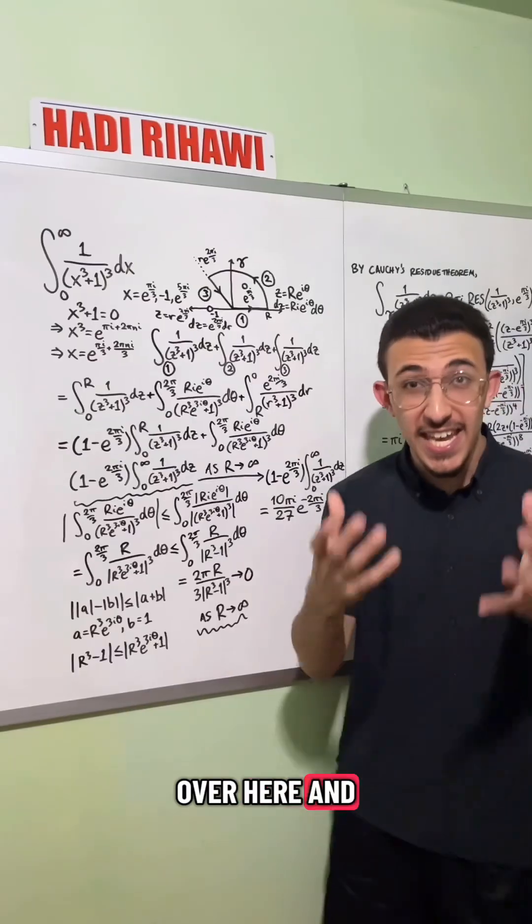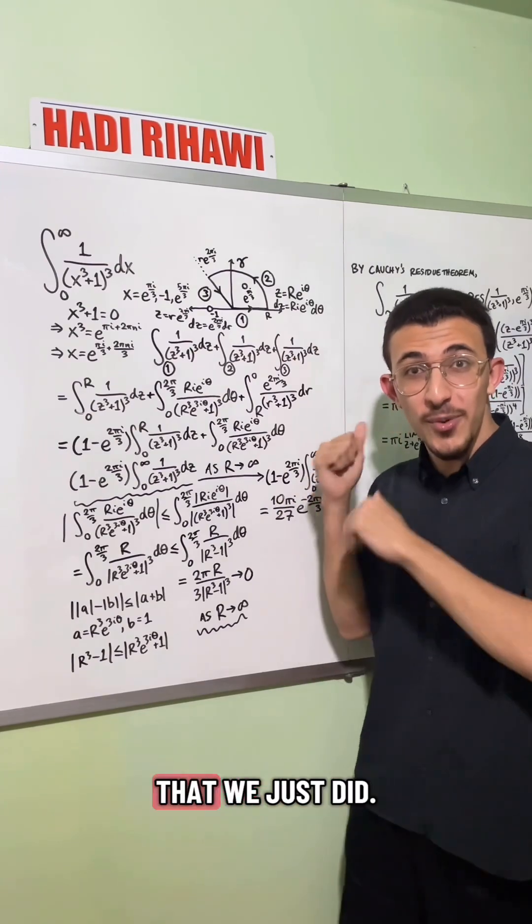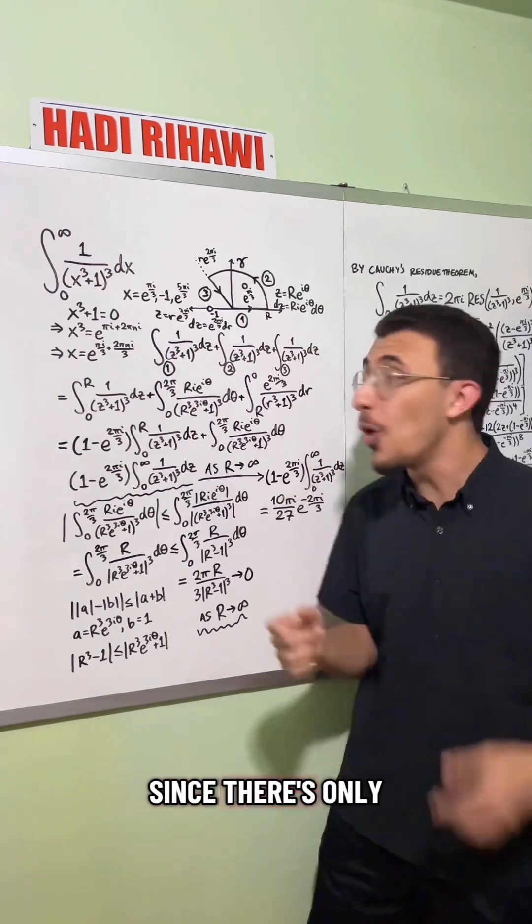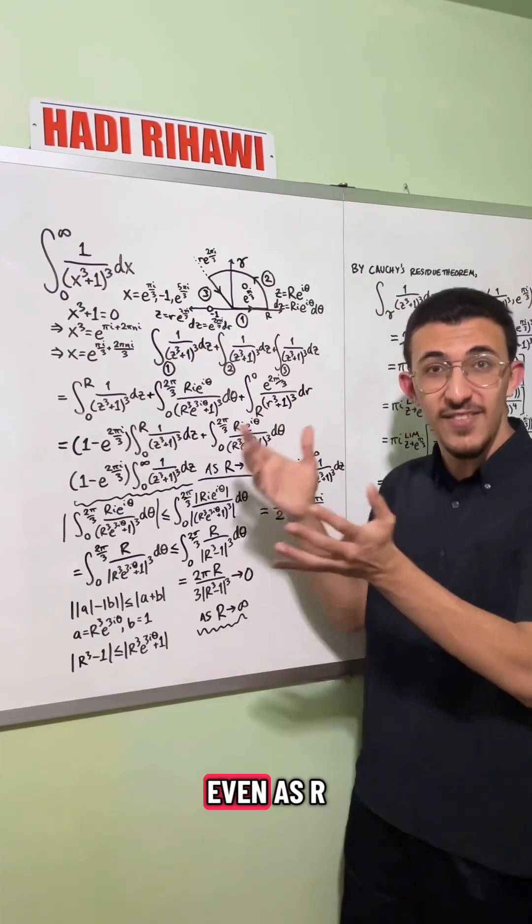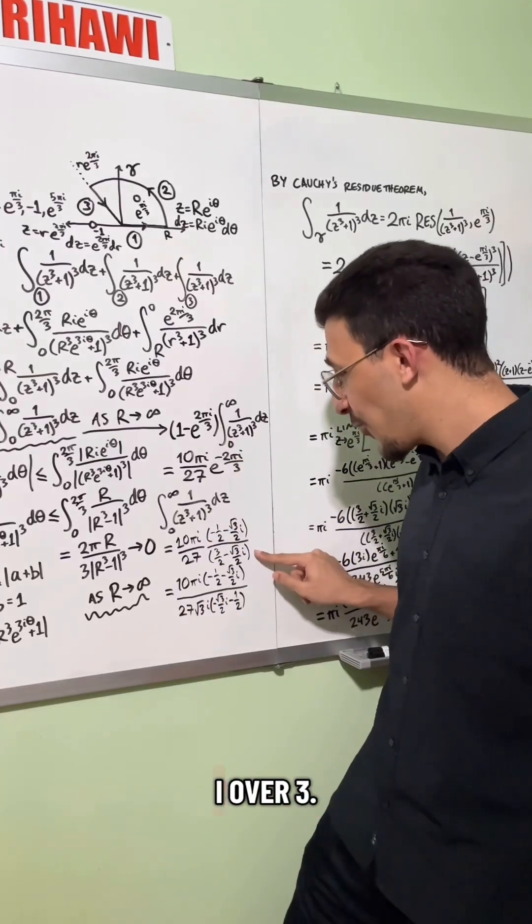So now we'll take it back over here and equate the integral as the contour goes out to infinity. We'll look at the contour work that we just did still applies here since there's only this one pole still contained even as r goes out to infinity.